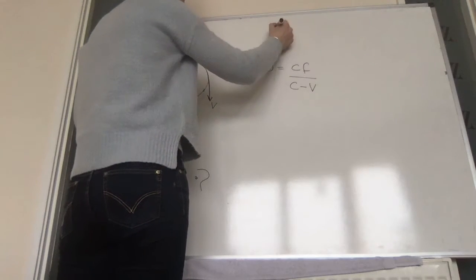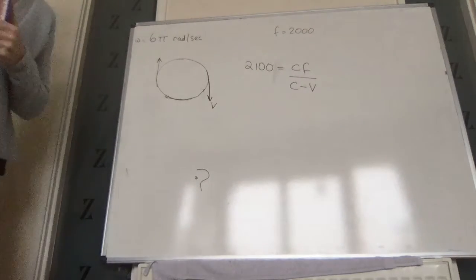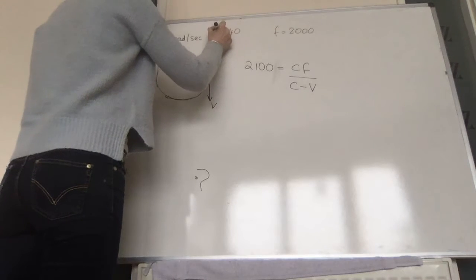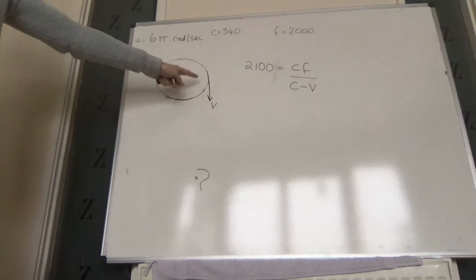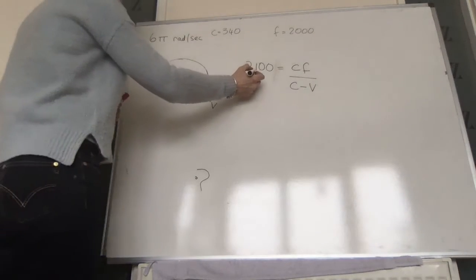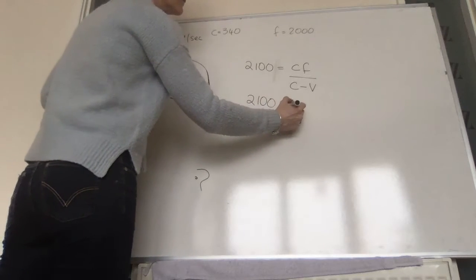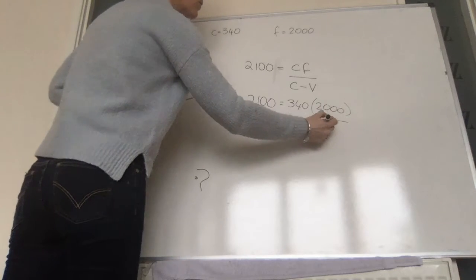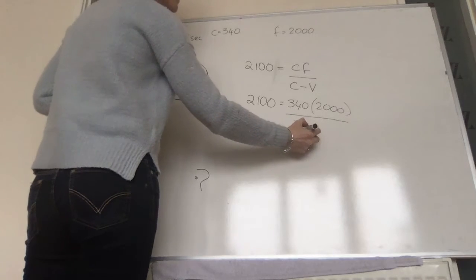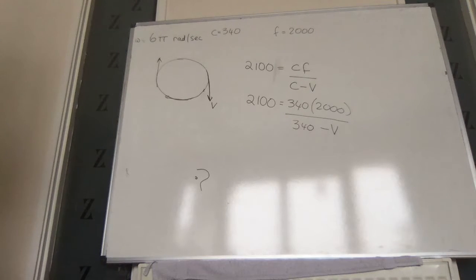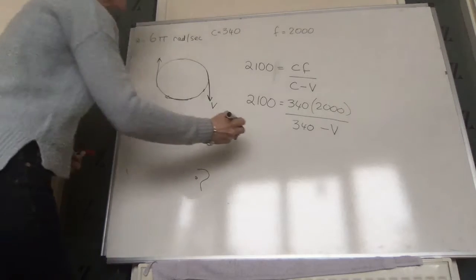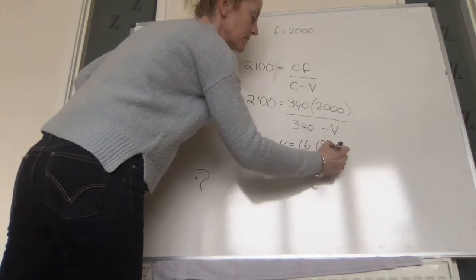The whistle emits a note of 2,000 hertz (2 kilohertz), so F equals 2,000 Hz. The highest note occurs when the source moves towards the observer, so: 2,100 equals 340 times 2,000 over (340 minus V). From this equation, V equals 16.19 metres per second.